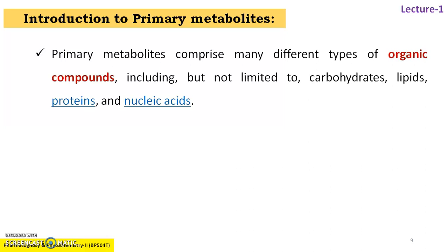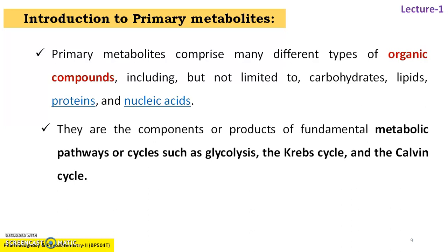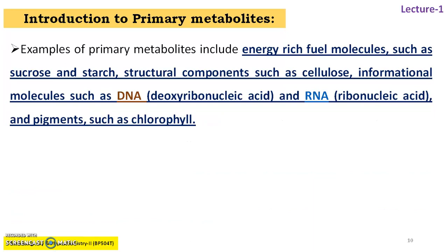Introduction to primary metabolites. Primary metabolites comprise many different types of organic compounds, including carbohydrates, lipids, proteins, and nucleic acids. They are components or products of fundamental metabolic pathways such as glycolysis, the Krebs cycle, and the Calvin cycle. Examples include energy-rich fuel molecules such as sucrose and starch, synthesized and stored in various organs like tubers, roots, stem, bark, and fruit. Structural components such as cellulose, information molecules such as DNA and RNA, and pigments are also part of primary metabolites.